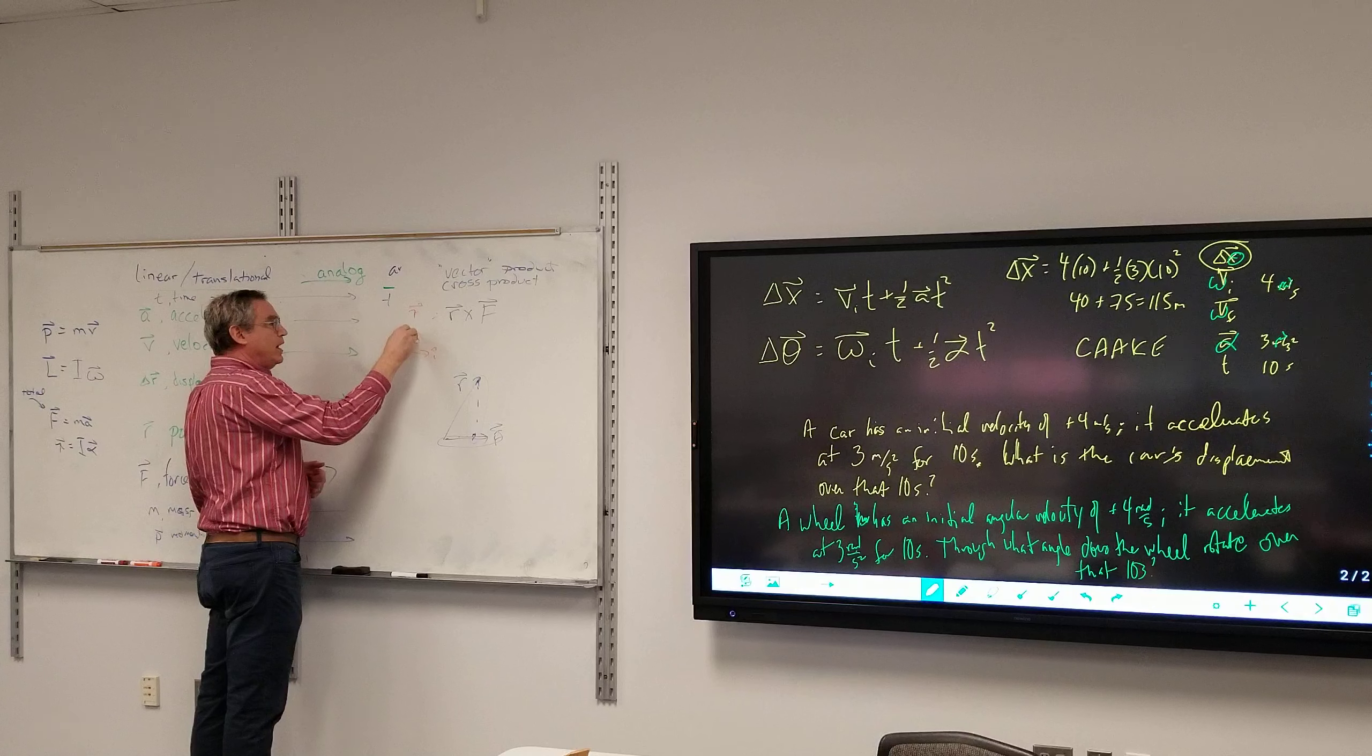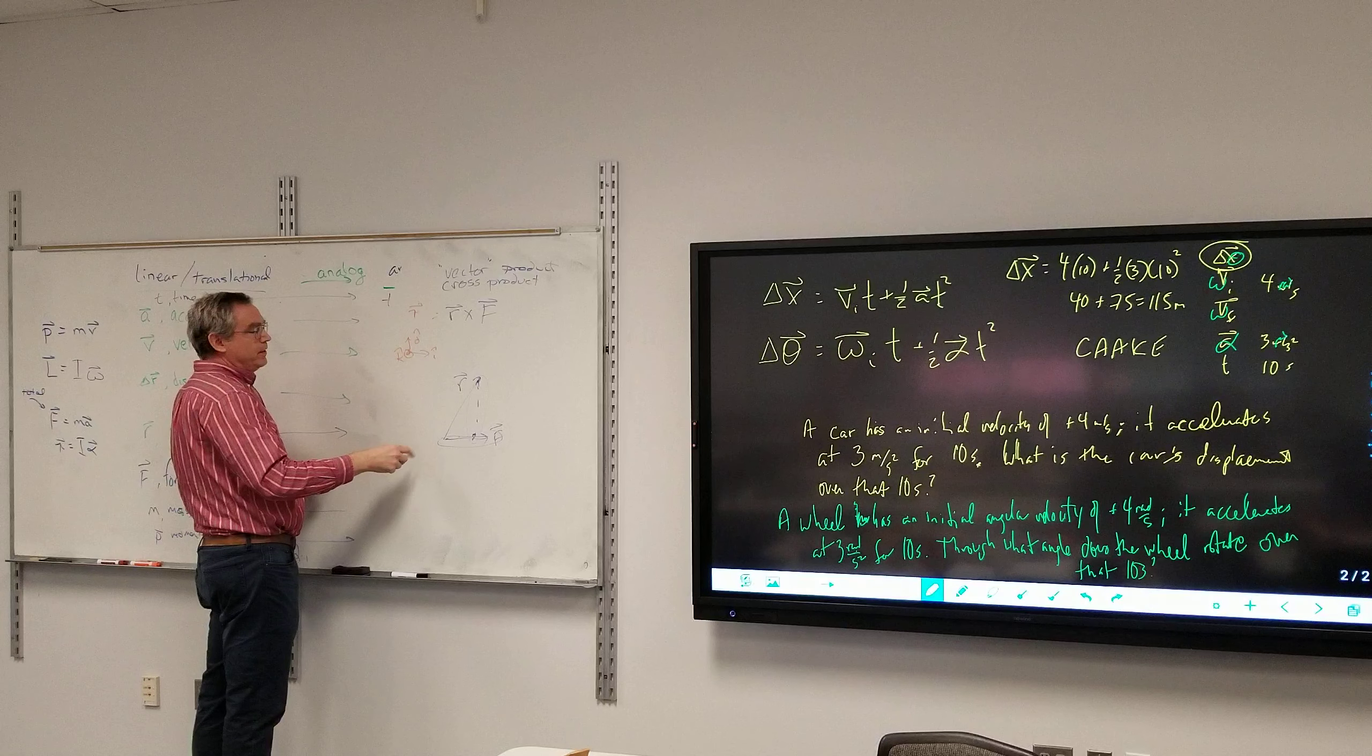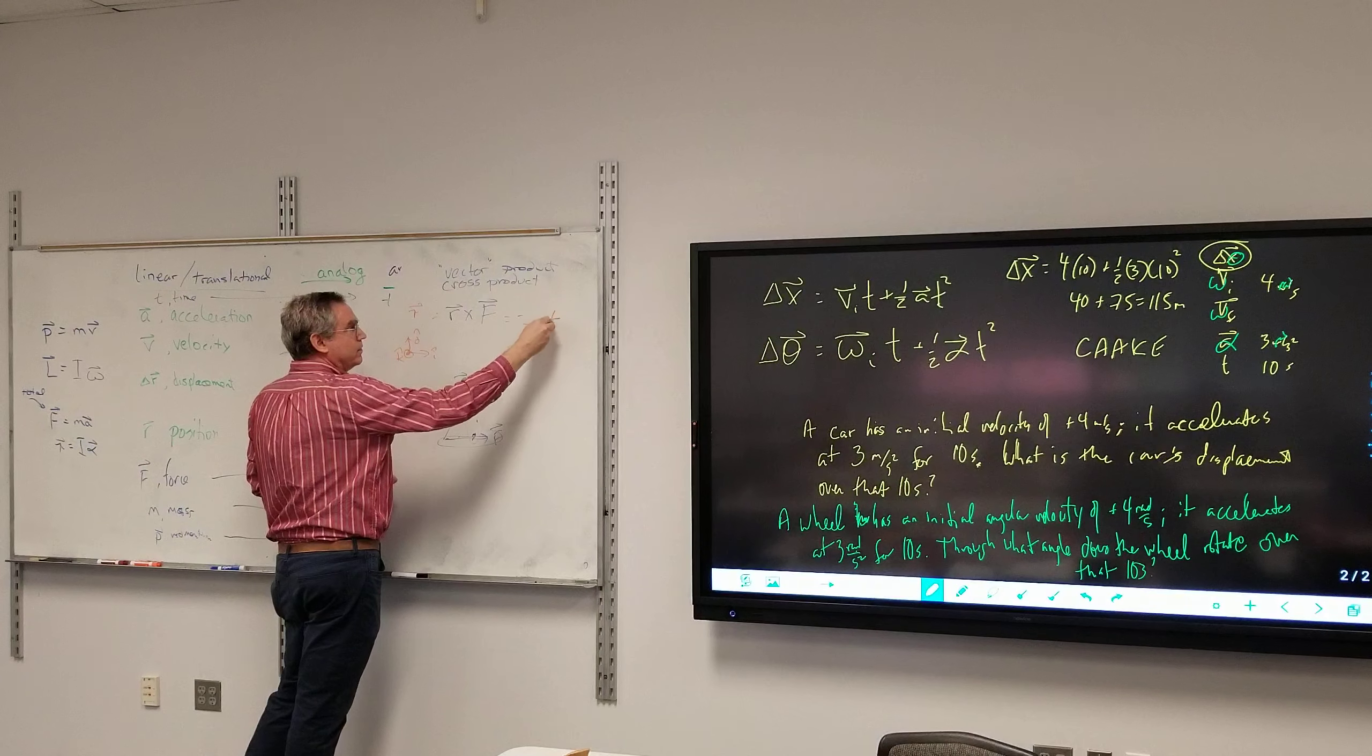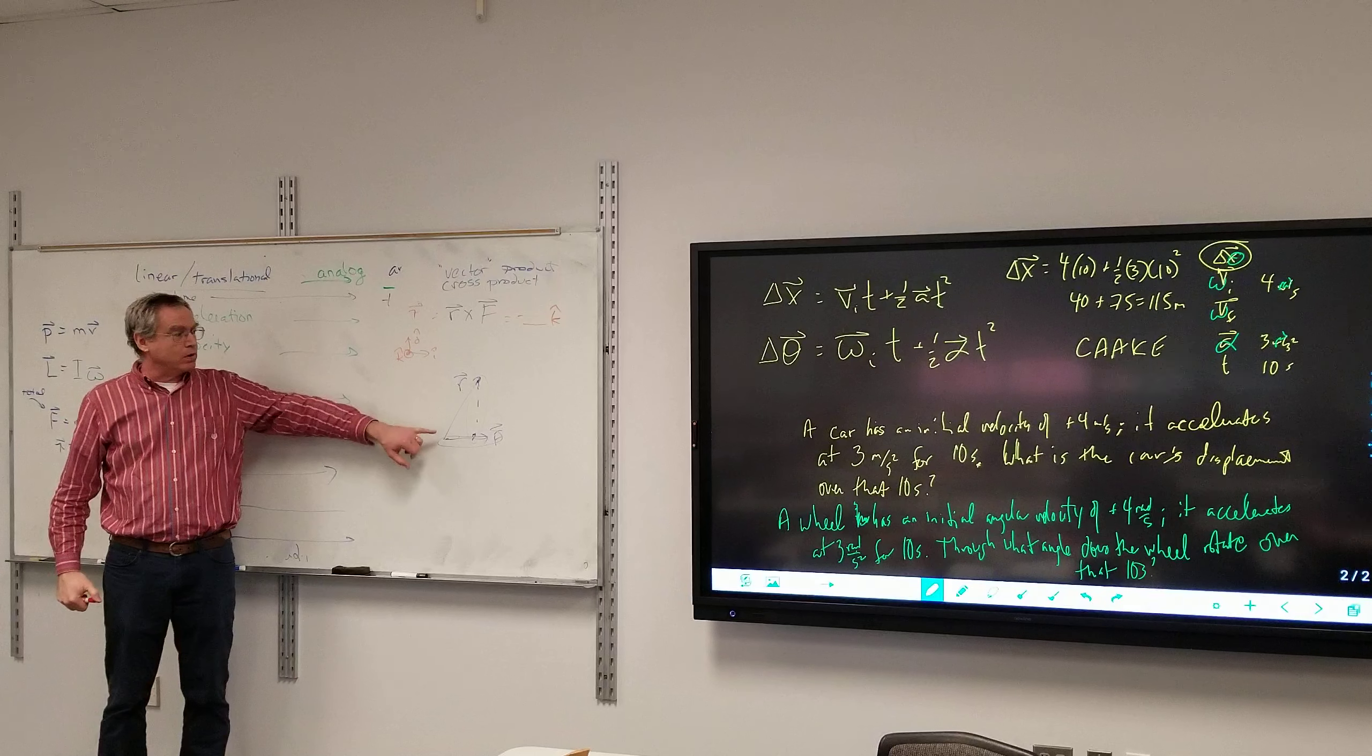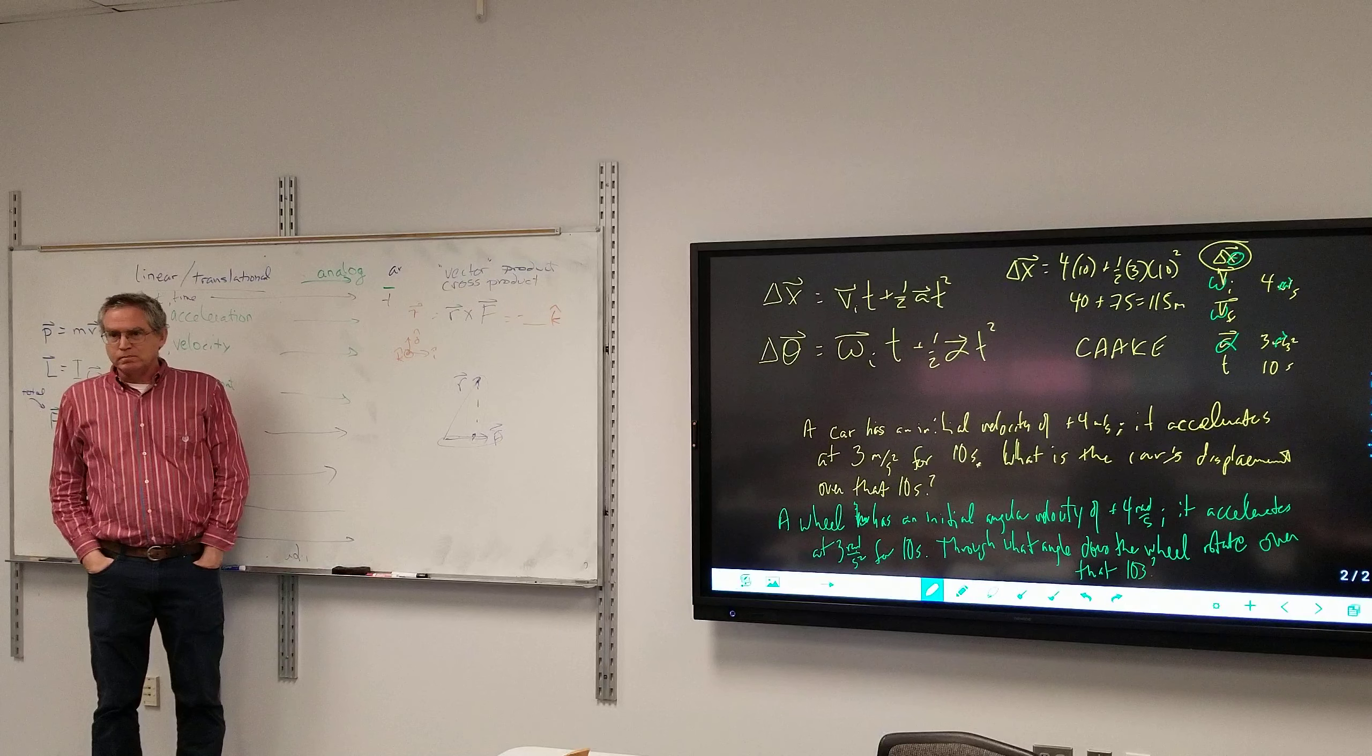So my thumb points into the board. And so if I were dealing with i-hat, j-hat, k-hat, and that dot means coming out of the board, then this would be into the board. So this would be something negative k-hat. For this r and f, the torque would be into the board.